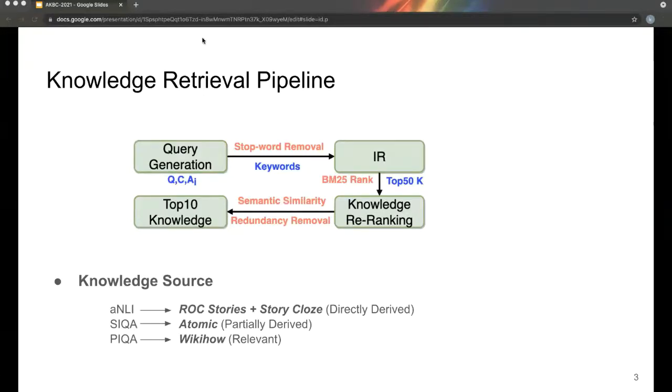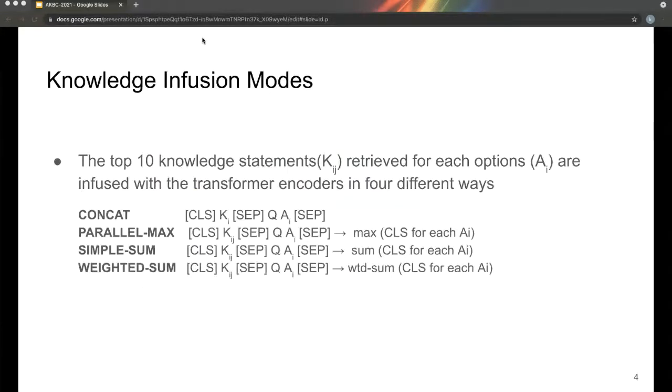Then we filter out 10 knowledge sentences using IR and knowledge ranking strategies. The top 10 knowledge sentences retrieved from each of the options are infused with the transformer encoders in four different ways. We have four models: concat, parallel, max, simple sum, and weighted sum.